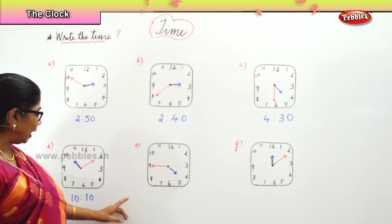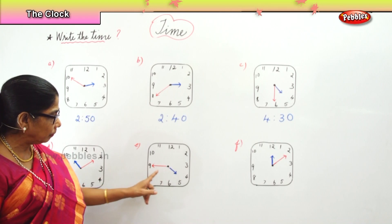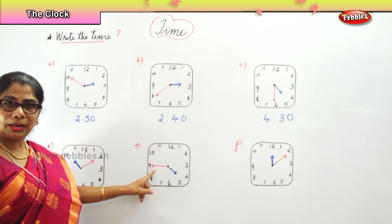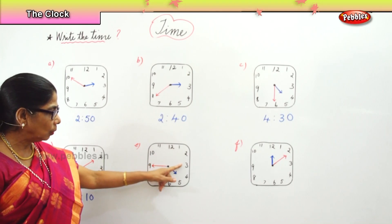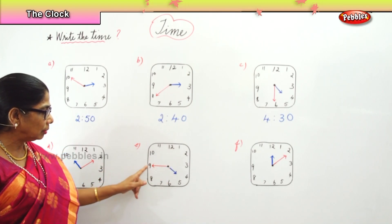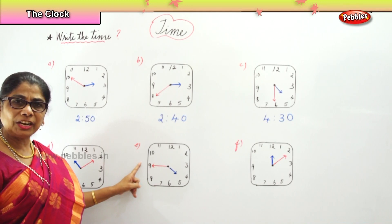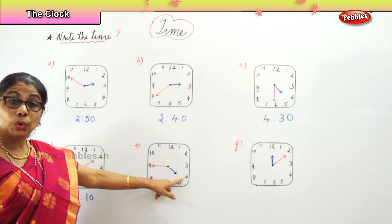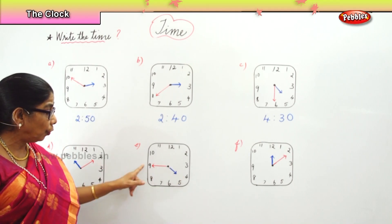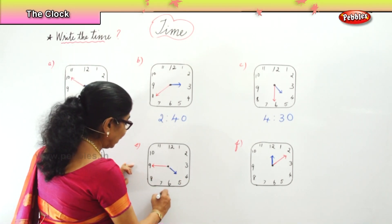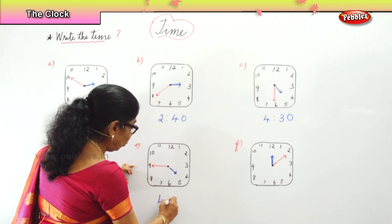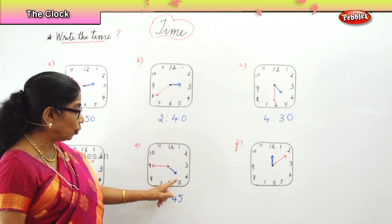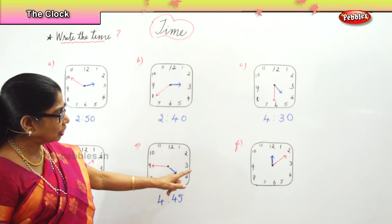The next clock shows the hour hand between four and five and the minute hand on nine. Three quarters. That is one quarter, two quarter, three quarters. How many minutes three quarters? Forty-five minutes. Forty-five minutes past four. So you will write it as four forty-five.